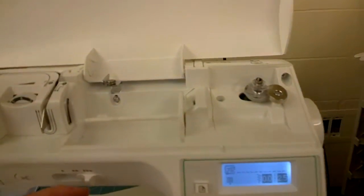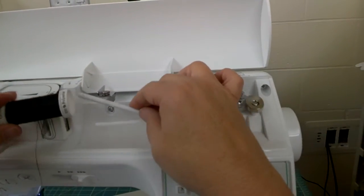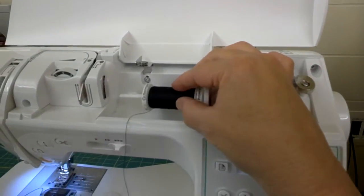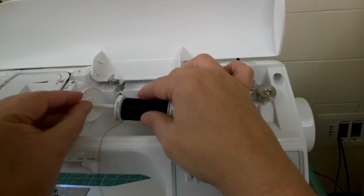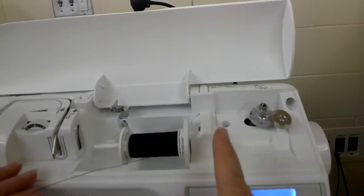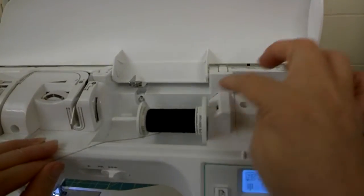The next thing you're going to do is put the thread on the sewing machine. I have some thread here. We're going to put it on the sewing machine. We're going to put this spool cap on and we're going to thread it to wind the bobbin.